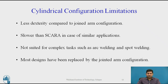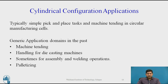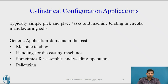That is one of the reasons SCARA typically ended up replacing the cylindrical configuration at the lower end of the payload spectrum. The cylindrical configuration is not suited for complex tasks such as arc welding and spot welding which require very difficult orientations — this is where the jointed arm configuration wins decisively. Both designs have now been replaced by the jointed arm configuration. General applications historically included machine tending, handling for die casting, and sometimes assembly and welding operations. These applications are cited based on historical usage documented in textbooks and websites.